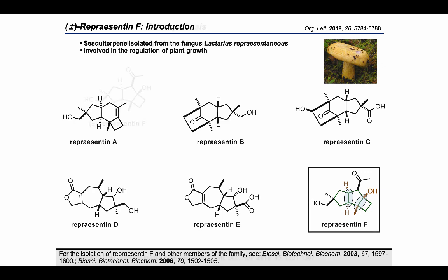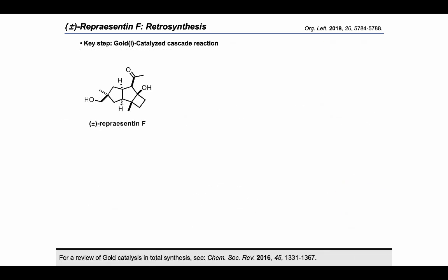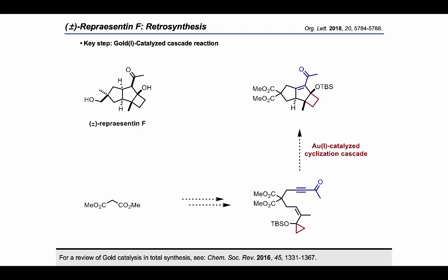When we were thinking about how to pursue this target, we saw an interesting opportunity for gold catalysis, given its versatility and efficiency to readily build polycycles. Our idea was that, starting from commercially available dimethylmalonate, we could build an appropriate cyclopropyl enyne substrate, which would engage in a gold-catalyzed cyclization cascade to construct the tricyclic skeleton of the molecule in a single step. Further decoration of the skeleton would provide the natural product.